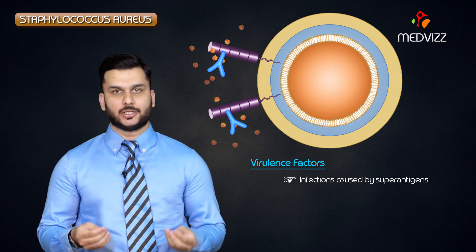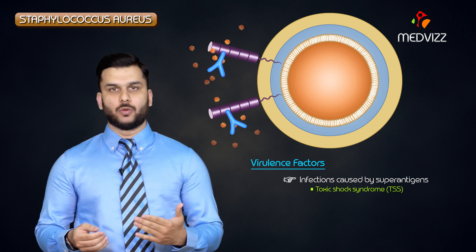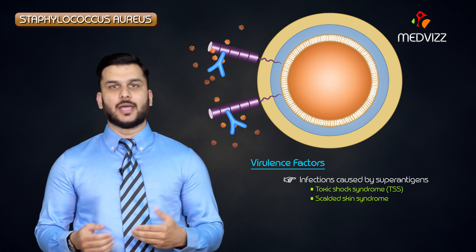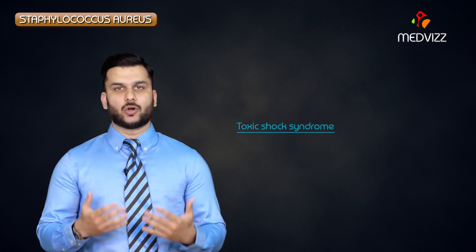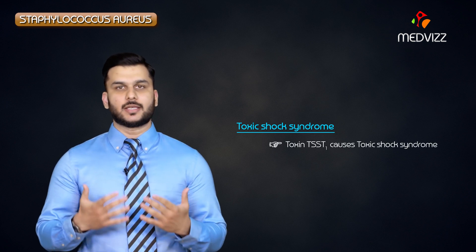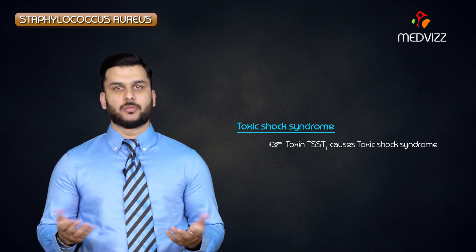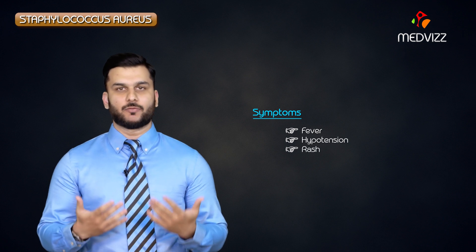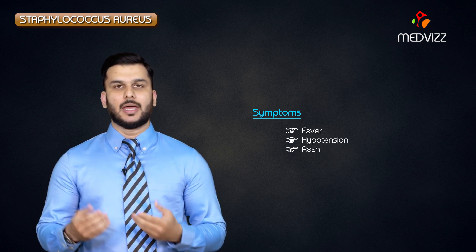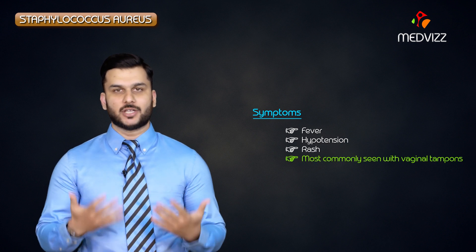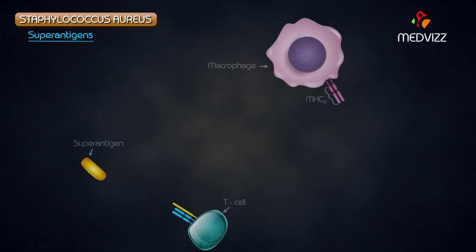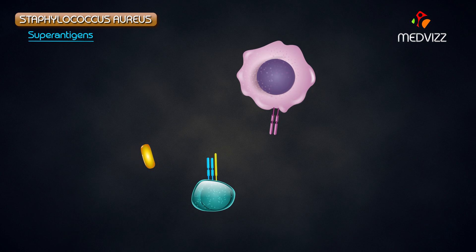The infections caused by superantigens include toxic shock syndrome, scalded skin syndrome, and food poisoning. The toxin that causes toxic shock syndrome is TSST-1 (Toxic Shock Syndrome Toxin-1). The important symptoms of toxic shock syndrome are fever, hypotension, and the presence of a rash, and it is very commonly associated with the use of vaginal tampons.